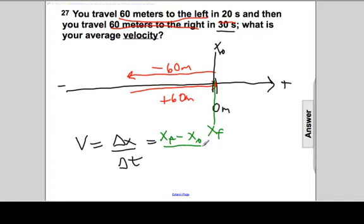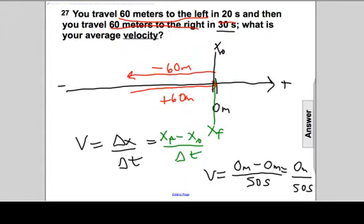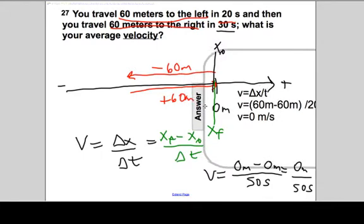divided by the total time, something quite interesting happens. I'll rewrite down below. The velocity will be the final location, zero meters, minus the initial location, we started at zero meters, divided by the total time, 20 plus 30 is 50 seconds. Zero minus zero is zero meters of displacement per 50 seconds. And it will leave us with an average velocity of zero meters per second.